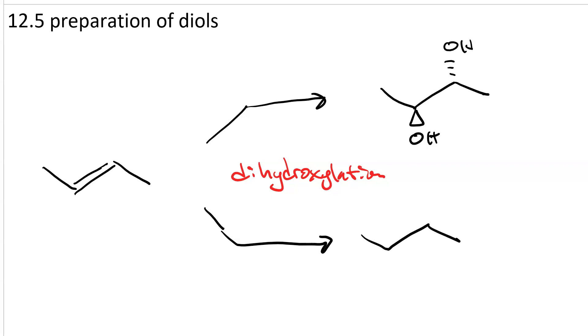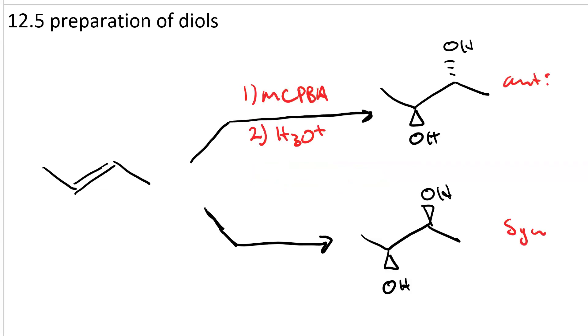We can either do anti-dihydroxylation or syn-dihydroxylation. Do you remember the reagents to do these? We can do anti-dihydroxylation using a peroxyacetic acid like MCPBA followed by acidic conditions that goes through an epoxide intermediate.